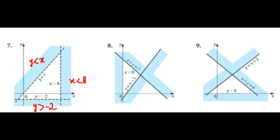Question number 8. Here you can see the unshaded region is bounded by 3 lines. One line is the y-axis, and the equation of the y-axis is x is equal to 0. The unshaded region is on the right side, so it will be x is greater than equal to 0, because this is not a dotted line, so we use the equal sign. The next line has the unshaded region on the upside, and it will be y is greater than equal to x minus 1. And for this third line, the unshaded region is on the downward side, so its inequality will be x plus y less than equal to 7.